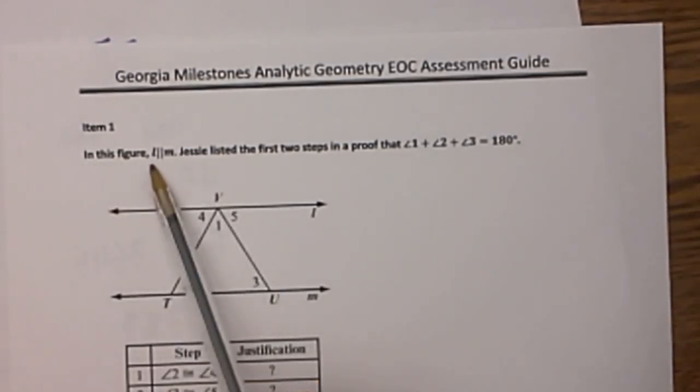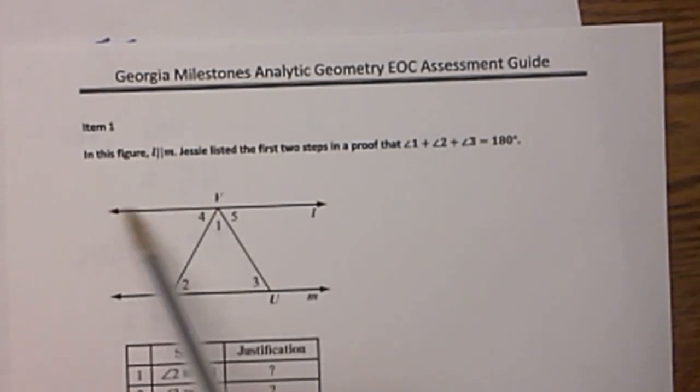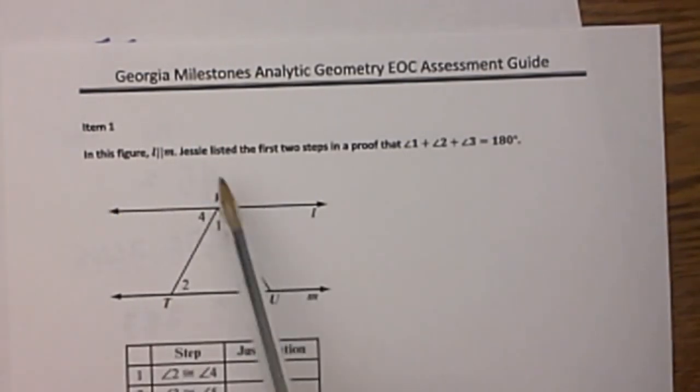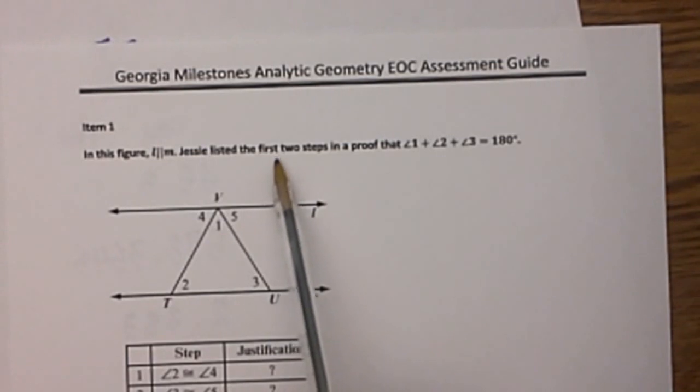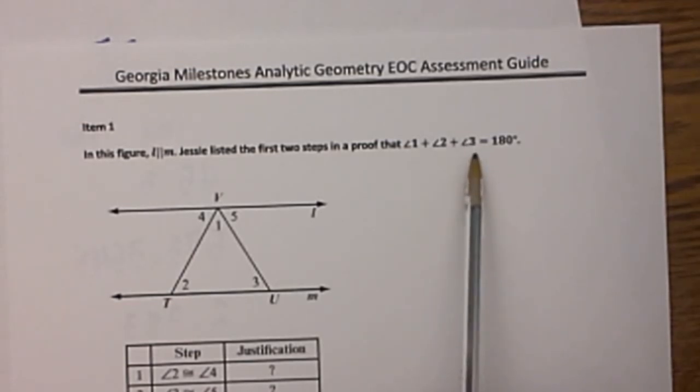In this figure, L and M are parallel to each other. Jesse listed the first two steps in a proof of angle 1 plus angle 2 plus angle 3 is equal to 180 degrees. So you can see angle 1, 2, and 3 are inside a triangle and you are trying to prove that.